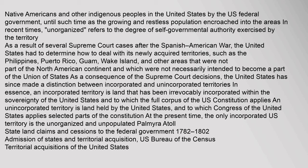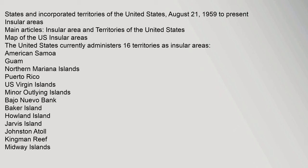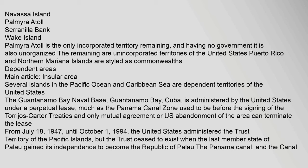As a consequence of Supreme Court decisions, the United States has since made a distinction between incorporated and unincorporated territories. An incorporated territory is land that has been irrevocably incorporated within the sovereignty of the United States and to which the full corpus of the U.S. Constitution applies. An unincorporated territory is land held by the United States, to which Congress applies only selected parts of the Constitution. At the present time, the only incorporated U.S. territory is the unorganized and unpopulated Palmyra Atoll. The remaining unincorporated territories of the United States — Puerto Rico and Northern Mariana Islands — are styled as Commonwealths.